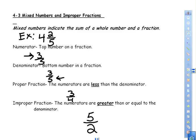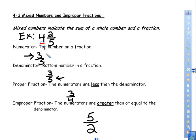Good afternoon, this is section 4-3: Mixed Numbers and Improper Fractions. Mixed numbers indicate the sum of a whole number and a fraction. For example, we are adding the whole number plus the fraction that's remaining. That is our example of what a mixed number is — it's called mixed because it is made up of both whole numbers and fractions.